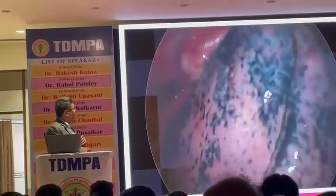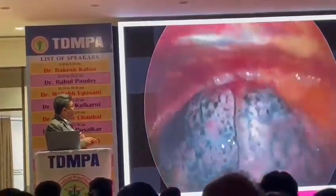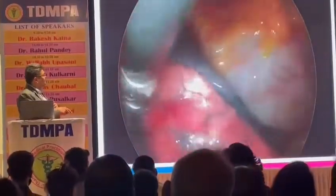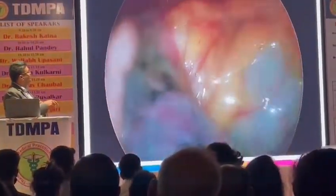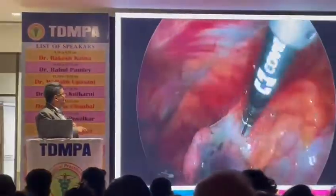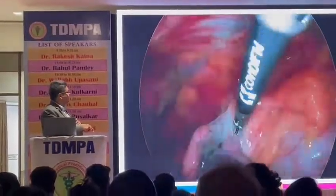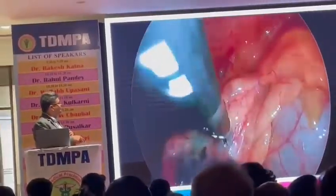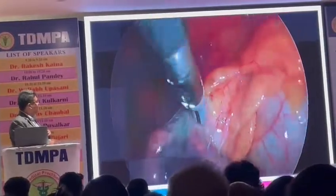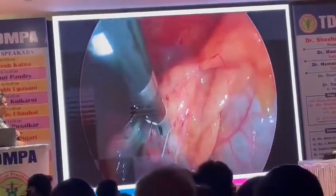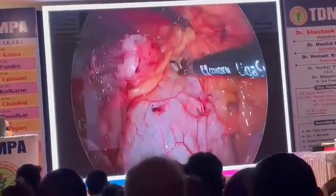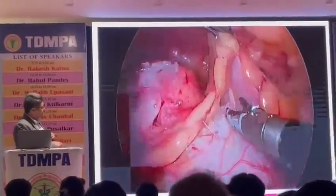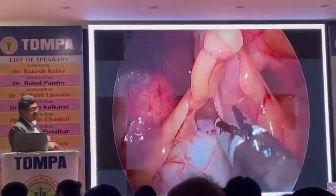We have put our camera ports inside the thorax. You can see here — this is the lung, this is the heart, and we can see the tumor here. The tumor is stuck to the lung, so now we are separating the lung from the tumor. And now we have started dissecting the tumor from the pericardium — this is the heart, this is the pericardium.